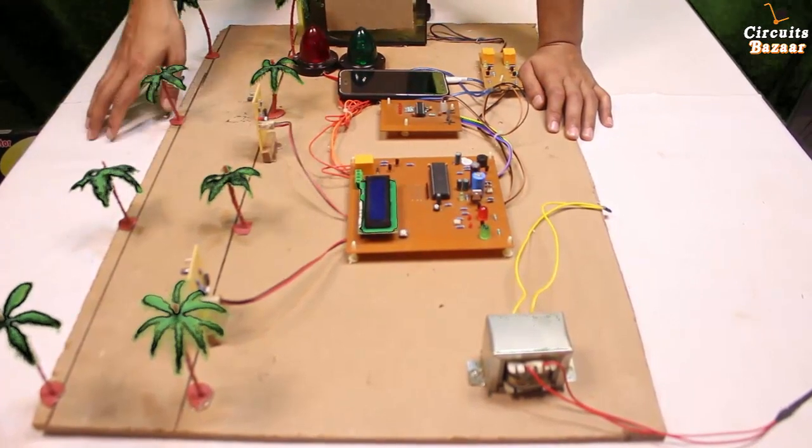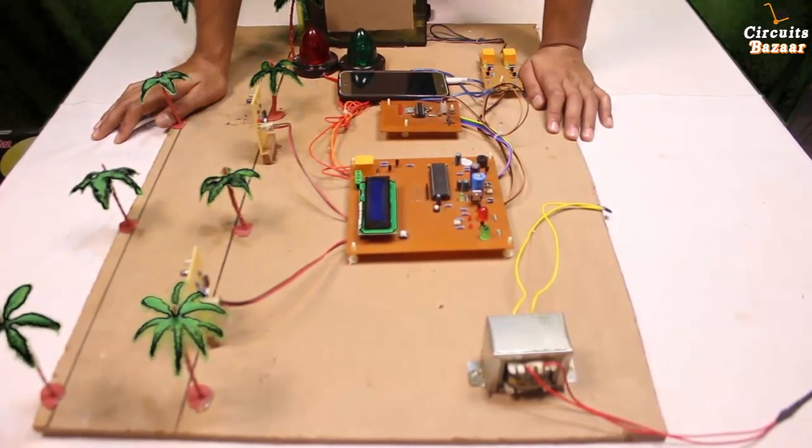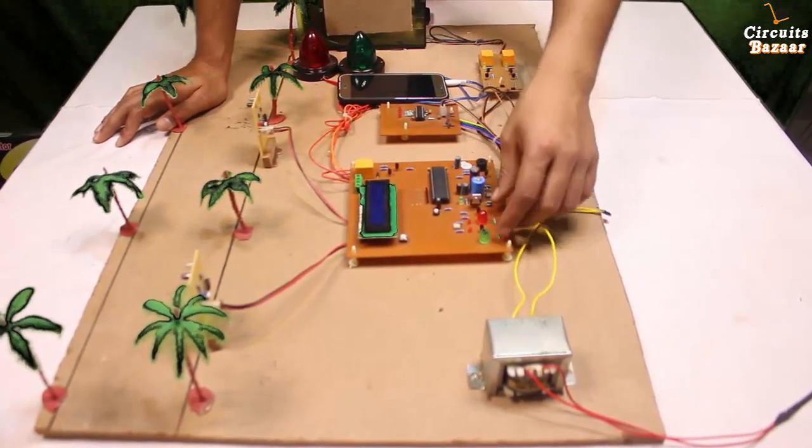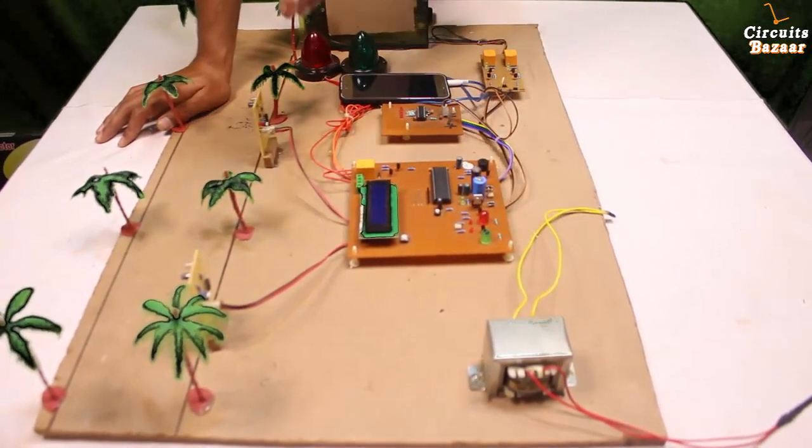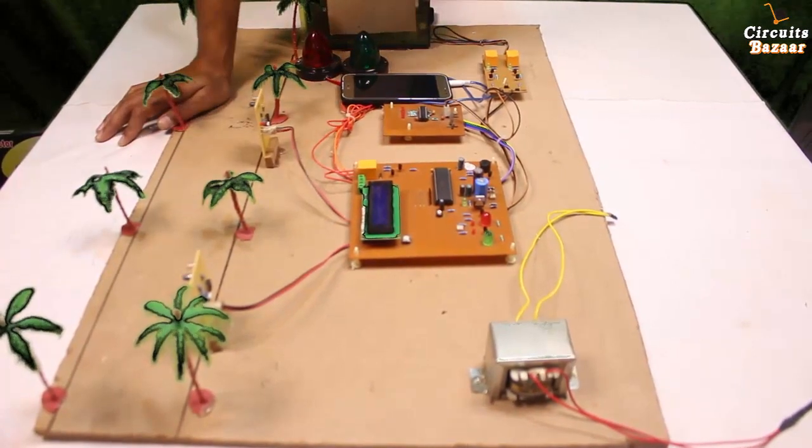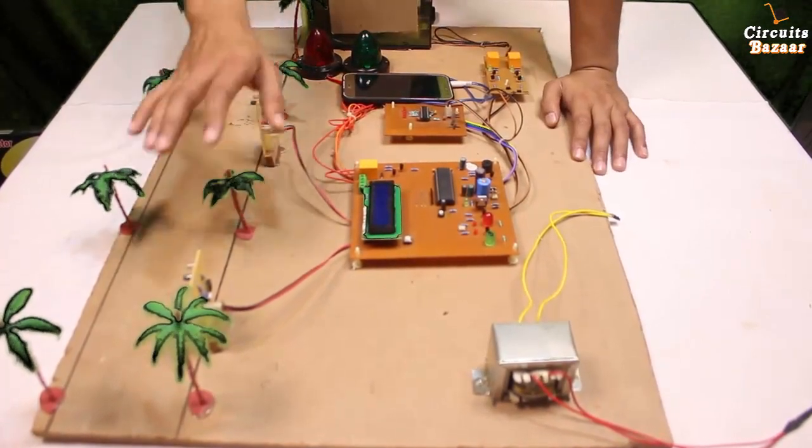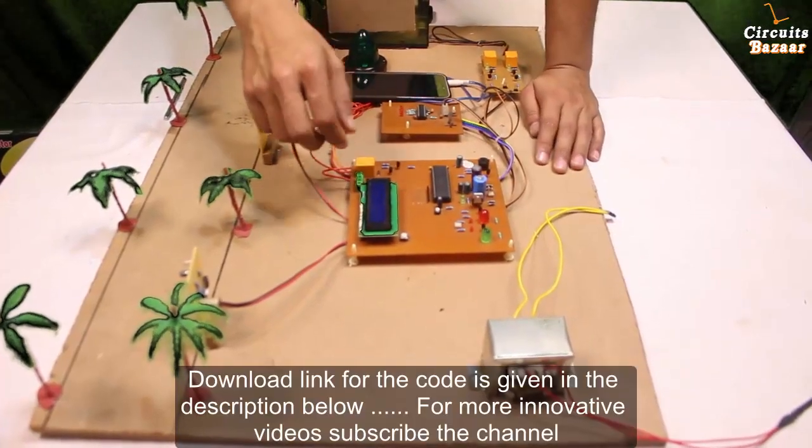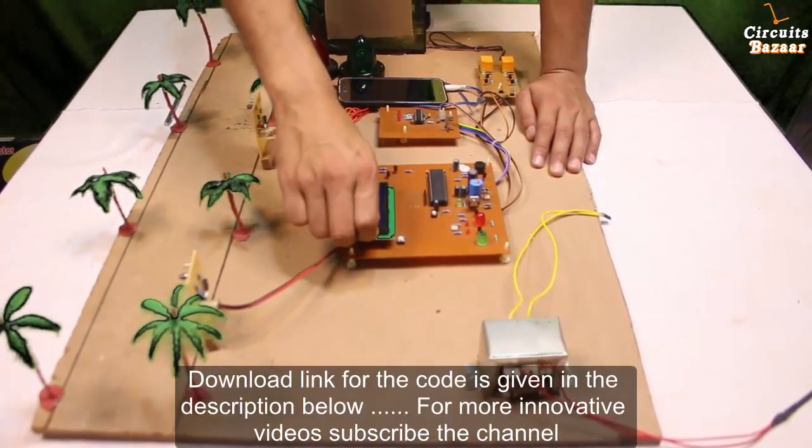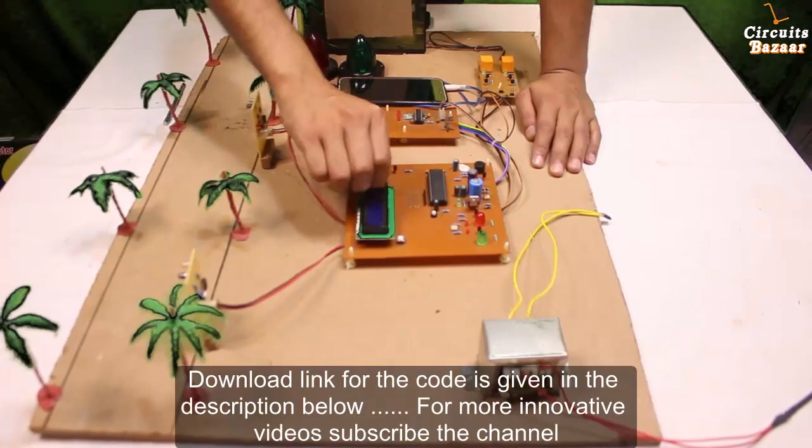This is 7805 voltage regulator which will convert 12 volt DC into 5 volt DC. These red and green indicators are the indicators whether your car is in speed or over speed. If the car is in speed then this green indicator will be on and if over speed then this red indicator will be on. And this is the LCD where the speed of the vehicle will be shown or the vehicle detection will also be shown.